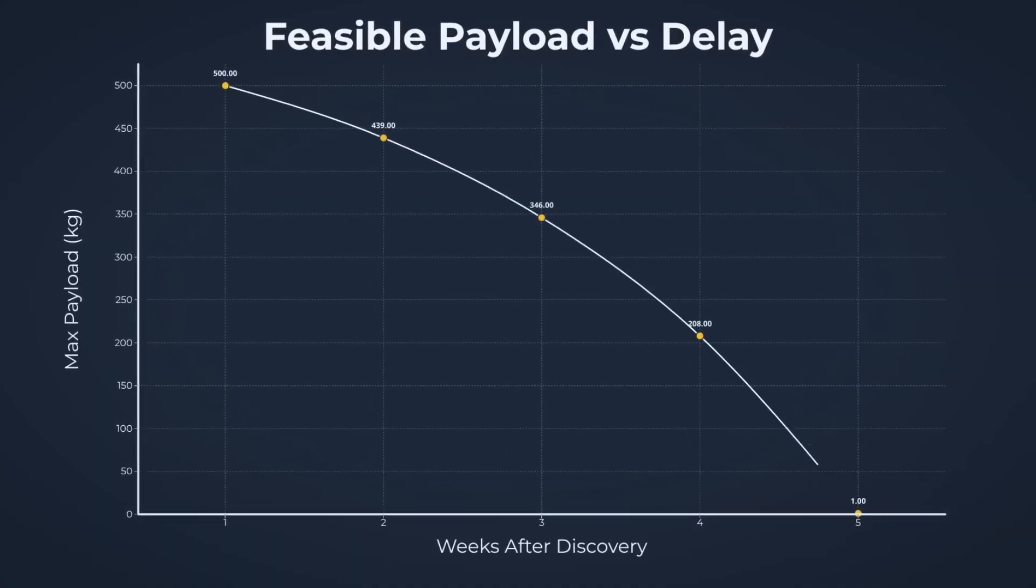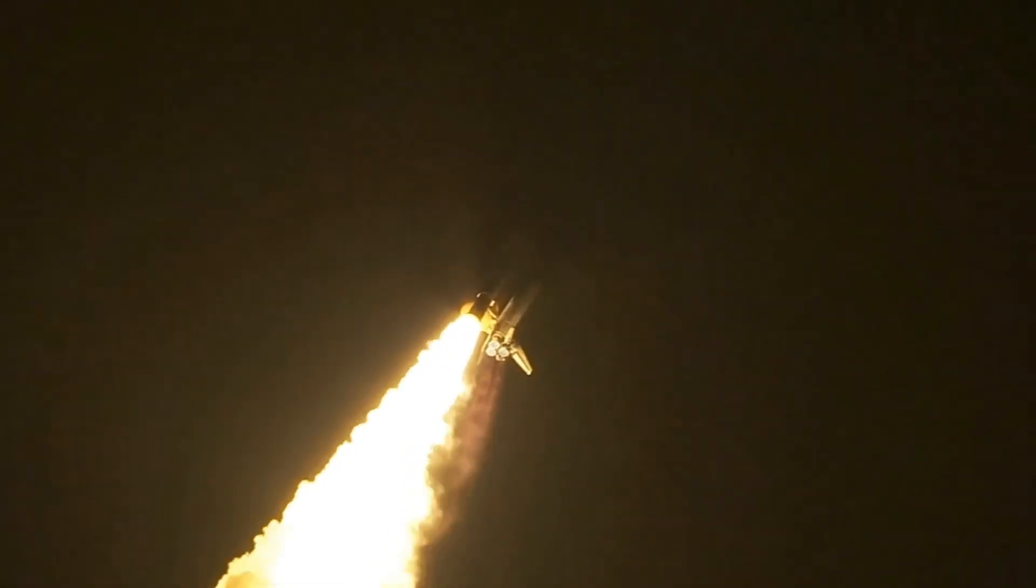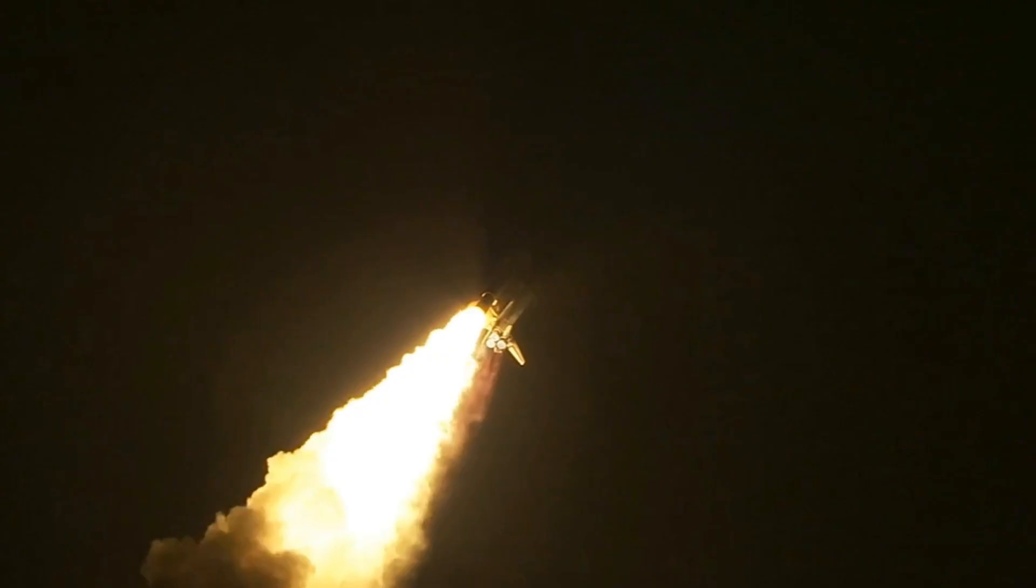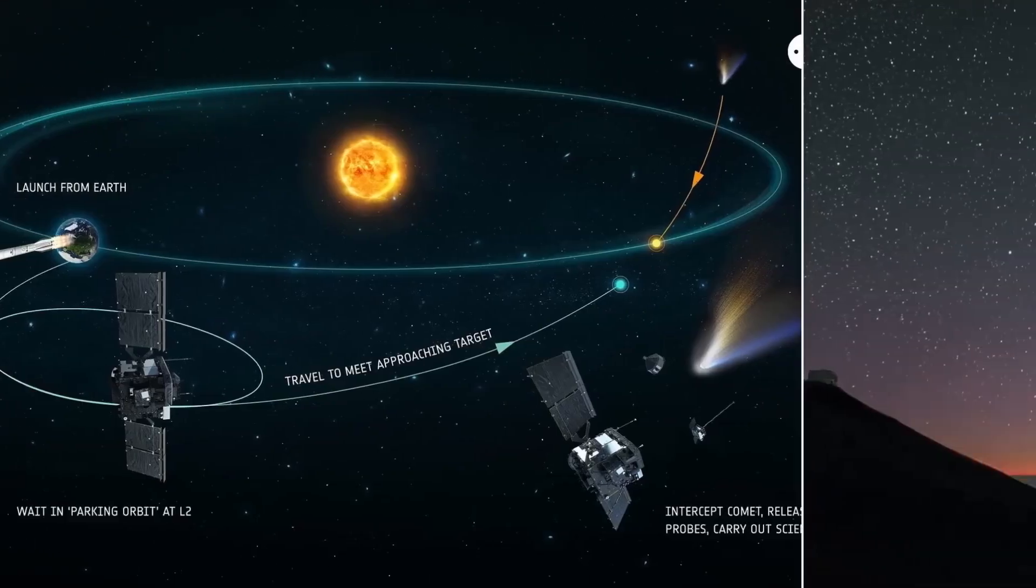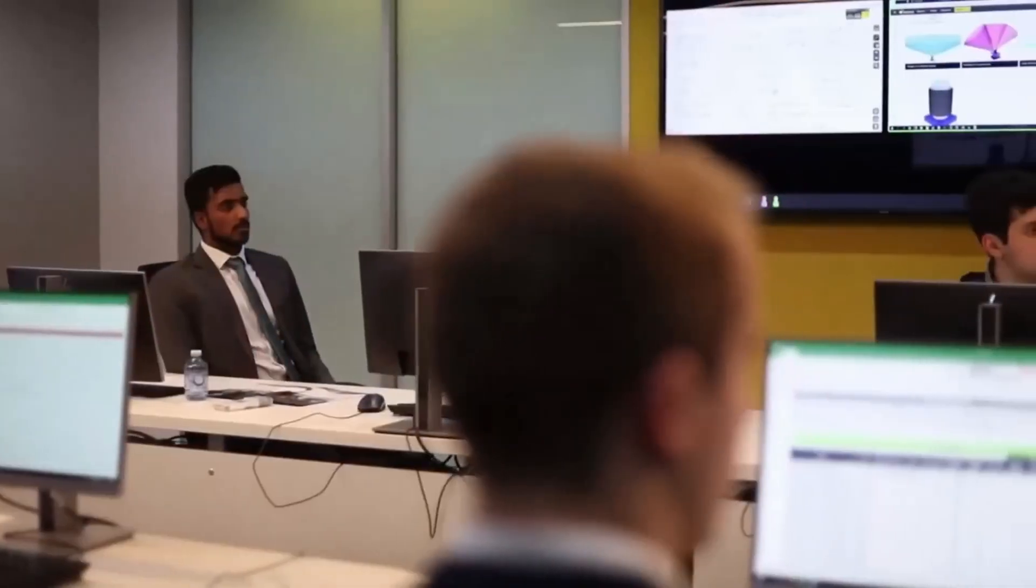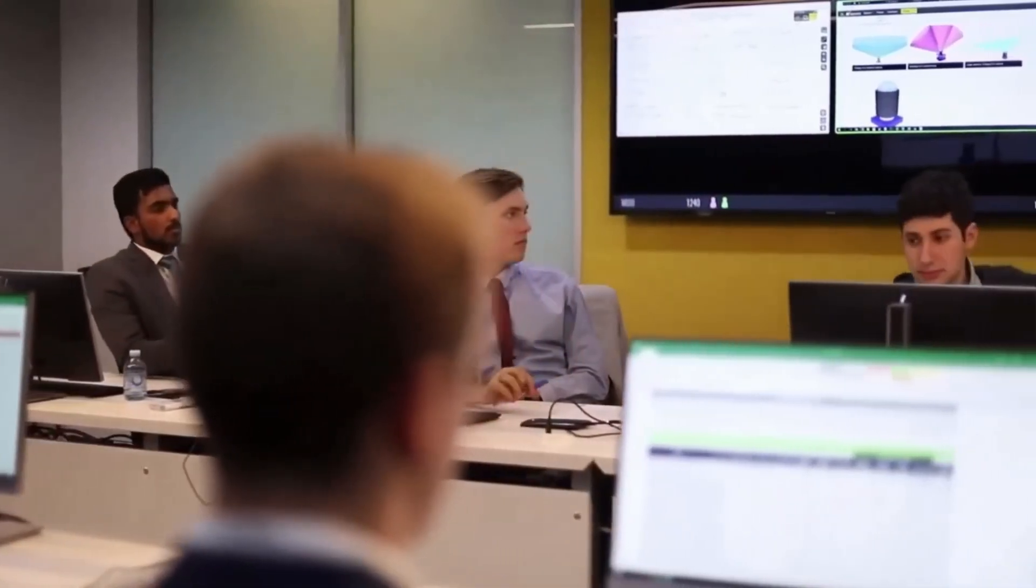The only viable option is a daring solar Oberth maneuver: launch a probe toward Jupiter, use its gravity to swing it back for a hair-raising dive near the sun, and fire the engines at perihelion, where gravity multiplies every ounce of thrust. But the mission window is brutally tight. By the time 3I Atlas was identified, the clock had already run down. Every week of delay adds kilometers per second to the requirement.